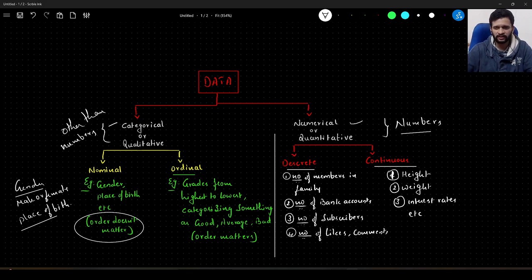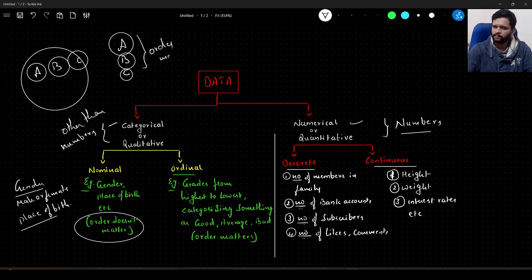There is another type of categorical data called ordinal data. In this type, the order actually matters. For example, arranging grades from highest to lowest: let's say we're grading students based on their performance. A grade will be highest, B grade next to A, C will be poor performance. If we have to arrange students based on performance in ascending or descending order, we write A, B, C. In this case, the order matters. These kinds of datasets are classified as ordinal data under categorical or qualitative data.